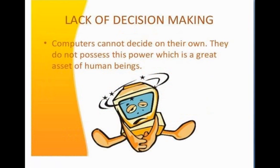The next weakness is lack of decision making. A computer cannot decide on its own — it does not possess this power, which is a great asset of human beings. In this time, we need to take good decisions to save ourselves, our family members, and the whole world. If we take right decisions and follow social distancing, we will definitely come out of this problem and corona will not spread.